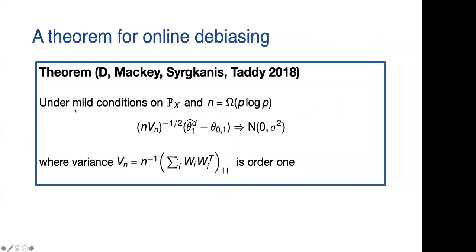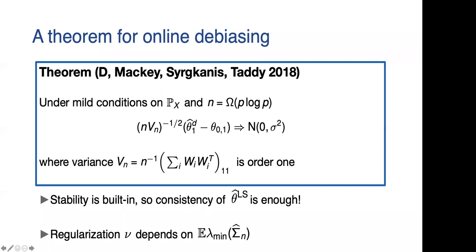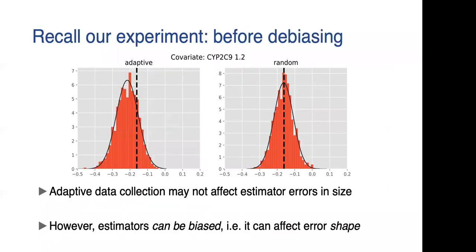The interesting thing I think is this is the theorem that you can prove about it. Under mild conditions and essentially just the consistency criterion on the sample complexity, the debiased estimate is going to be Gaussian with variance that is order one, as you'd expect. The important thing is that the stability condition that's required for the data collection process is actually built into this debiased estimate. So you don't really need it as an additional assumption. All you need is that the original pilot estimate is stable. You need something to decide the regularization, but I'll skip that in the interest of time.